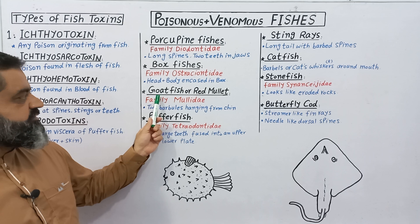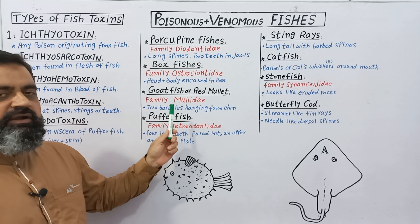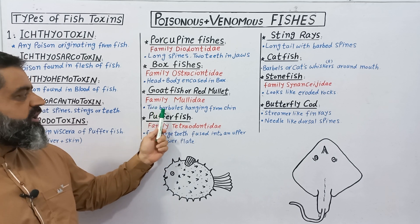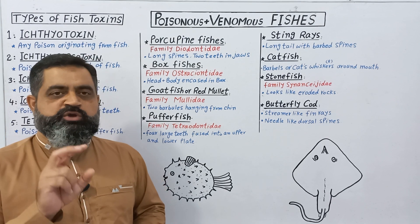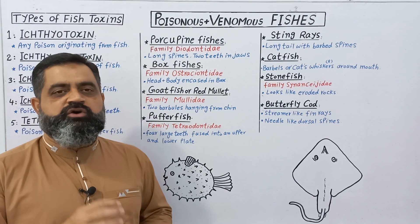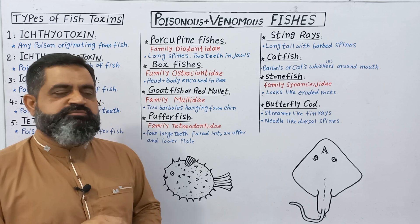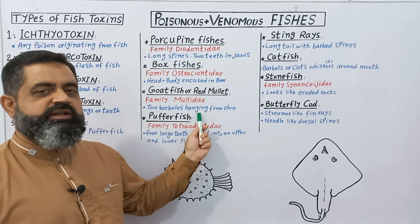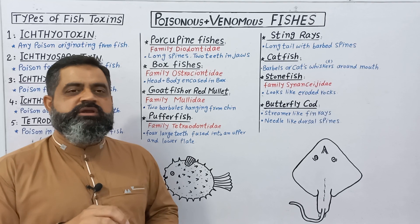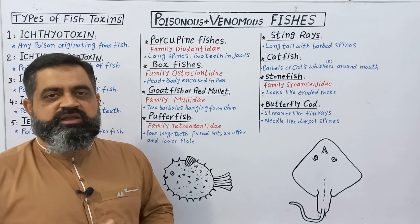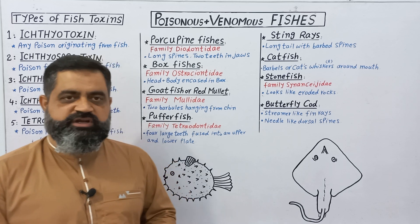The third type of poisonous fish is goatfish or red mullet. It belongs to family Mullidae, and its distinguishing character is two barbules hanging from the chin — two barbule structures hanging on the lower jaw. You can identify this fish by these barbules. By eating the flesh of this fish, poisonous material can get into your body and you can experience the harmful effects of that poison.